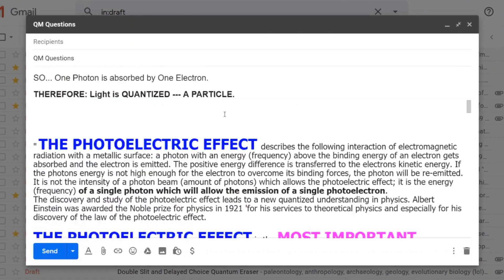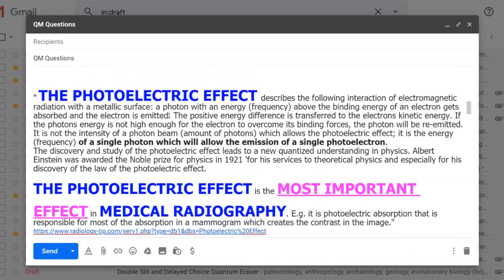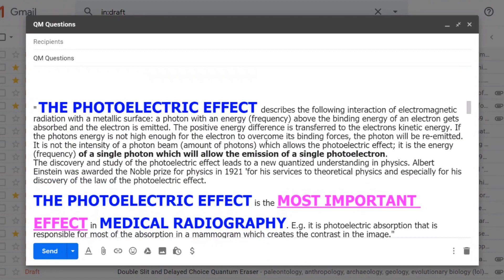From radiology.com: the photoelectric effect describes the following interaction of EM radiation with a metallic surface. A photon with an energy frequency above the binding energy of an electron gets absorbed and the electron is emitted. The positive energy difference is transferred to the electron's kinetic energy. If the photon's energy is not high enough for the electron to overcome its binding forces, the photon will be re-emitted. It is not the intensity of a photon beam, amount of photons, which allows the photoelectric effect. It is the energy frequency of a single photon which will allow the emission of a single photo electron.